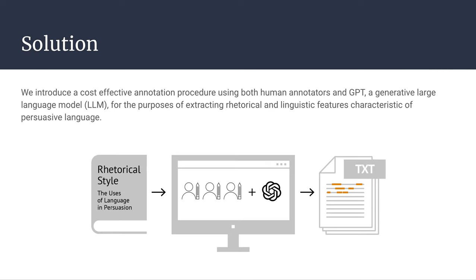So we turn to the literature on the language of persuasion to generate a novel feature set for the downstream task of propaganda technique detection. We codify 22 features, each with 3 to 14 possible values.